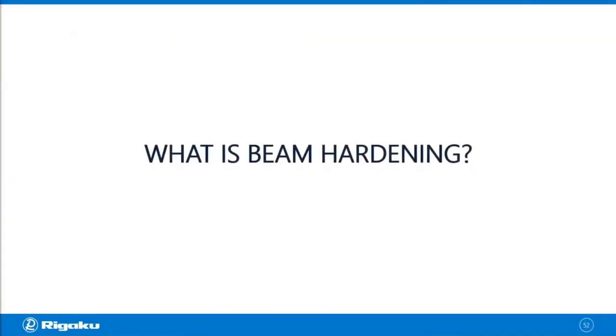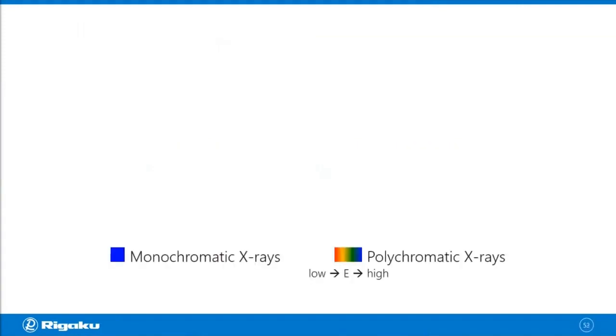So what is beam hardening? To explain what it is, I'm going to use solid blue to represent monochromatic x-rays, the single energy x-rays, and I'm going to use rainbow colors to represent polychromatic x-rays. They have a range of energy.